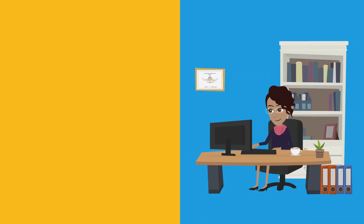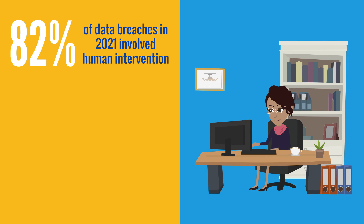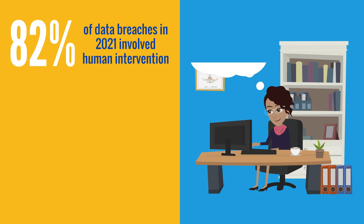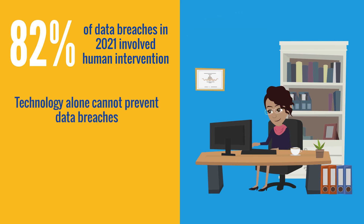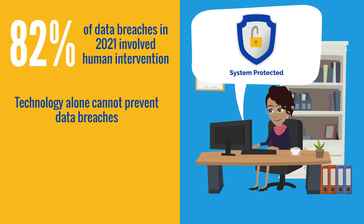Staying educated is important — 82% of data breaches in 2021 involved a human element. This confirms that the actions people take play a major role in security incidents. Technology designed to block phishing attacks, such as spam filters and antivirus software, is effective and will block a substantial number of threats.